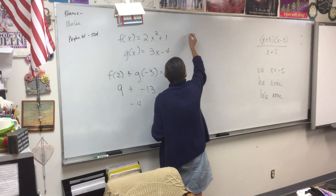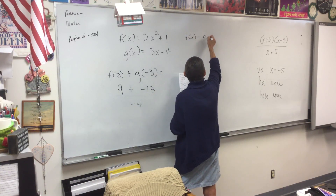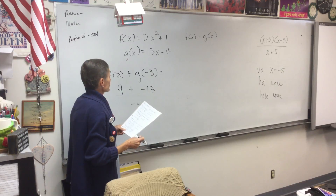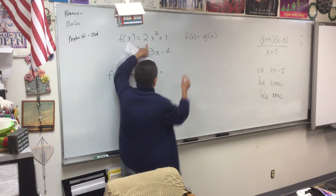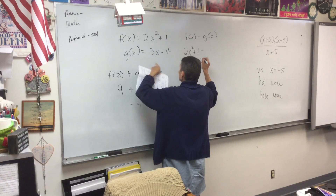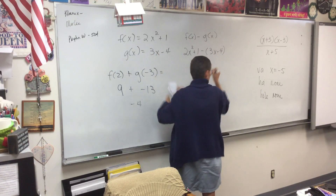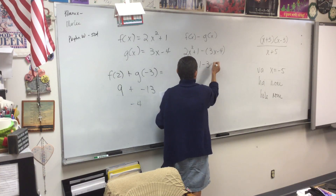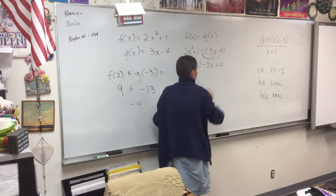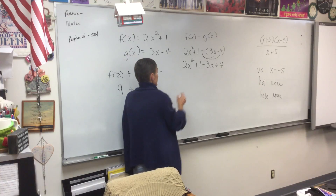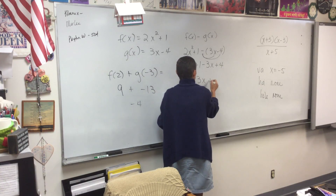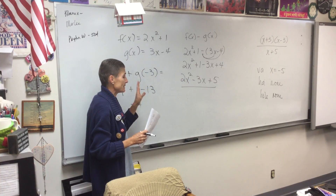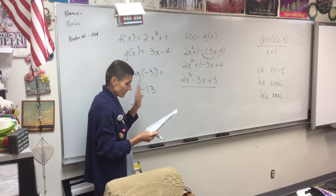Part B: what's f of x minus g of x? f of x would be 2x squared plus 1, minus 3x minus 4. I'm going to be careful when I simplify - I distribute my negative. So the answer is 2x squared minus 3x plus 5. That's your answer. Stop - don't do anything else, don't do anything to that, you are done. Don't get carried away.